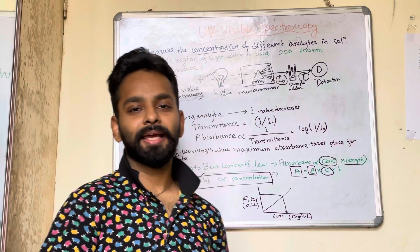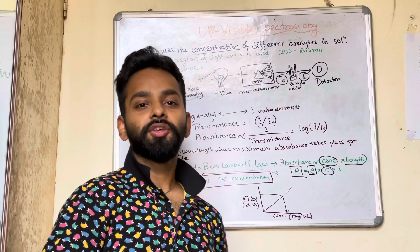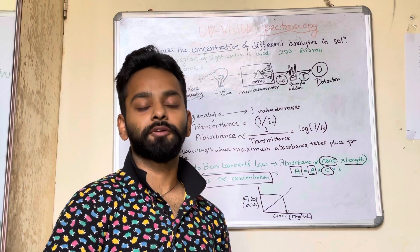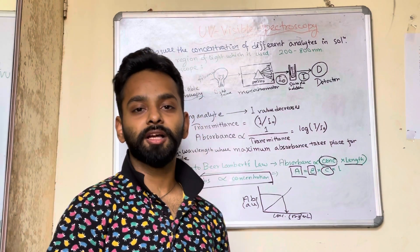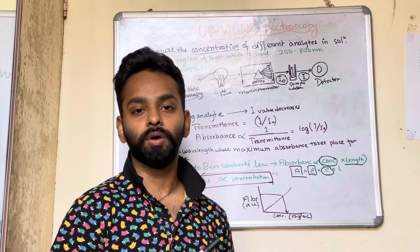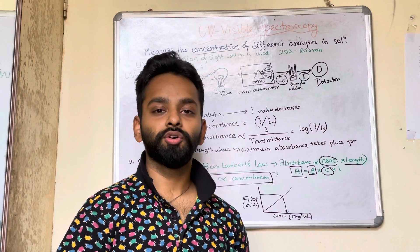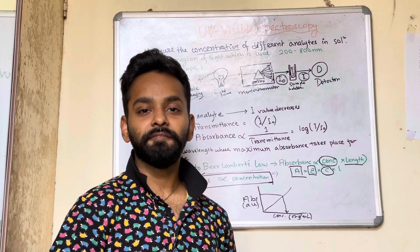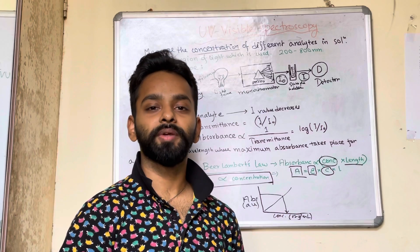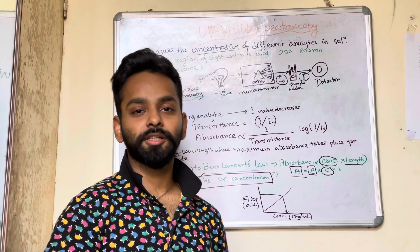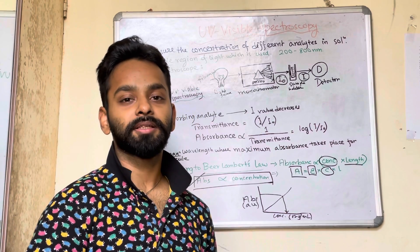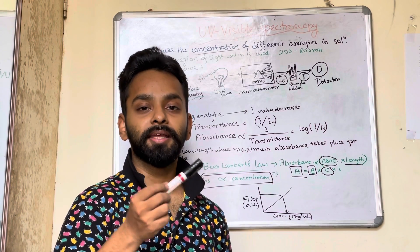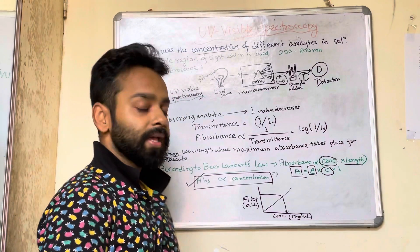Hello and welcome to another video in the lecture series on advanced biomaterials. In the previous video we discussed UV-visible spectroscopy and its significance, and what spectroscopy is in general. Today's video will discuss what the UV-visible spectroscope is and how it works to determine the concentration of an analyte. Spectroscopy is a technique which investigates the interaction of matter with electromagnetic radiation, and UV-visible spectroscopy determines the interaction of matter with wavelength or energy in the UV-visible region.